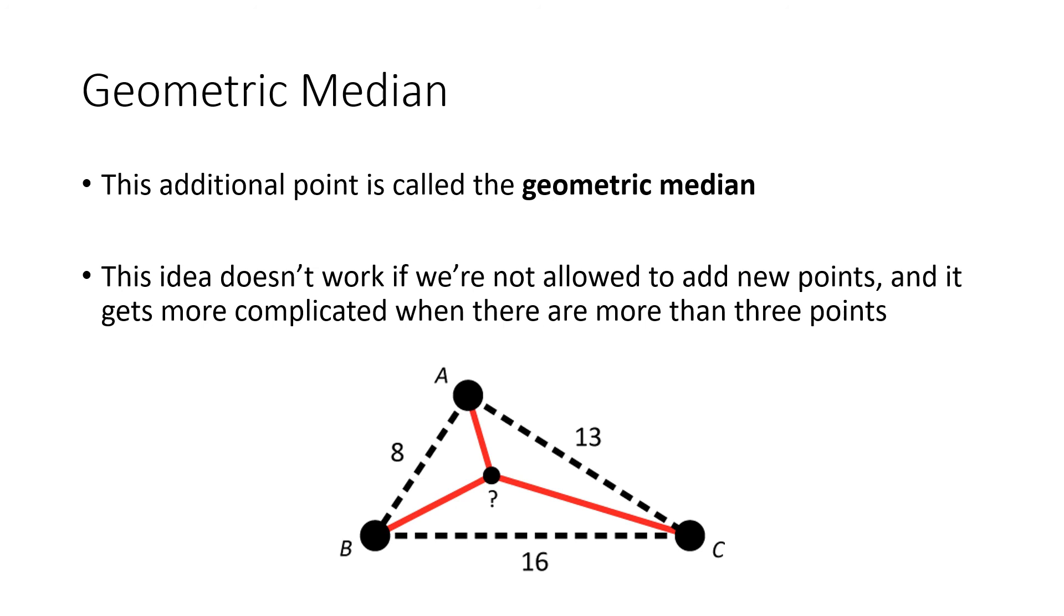But this isn't always going to work. For example, in the bridge problem, we can't invent a new landmass. We can't always create this new point, but in some geometric situations we can. When we say Kruskal's algorithm gives the best solution, we mean the best solution with the restrictions we're putting on ourselves—that we can only use the edges we started with. In the real world, sometimes we can think outside the box and create new points for better solutions.